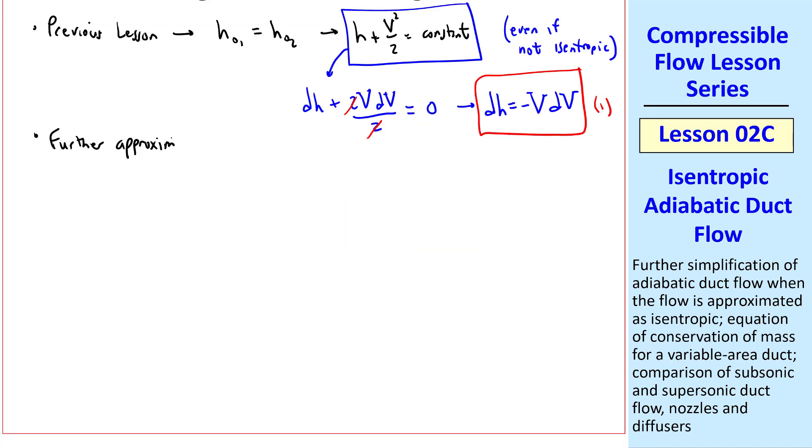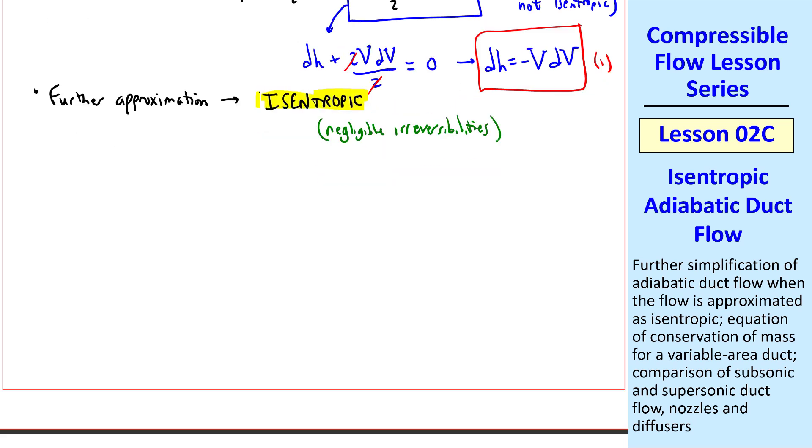Now let's make a further approximation, namely isentropic. In other words, negligible irreversibilities, like friction.